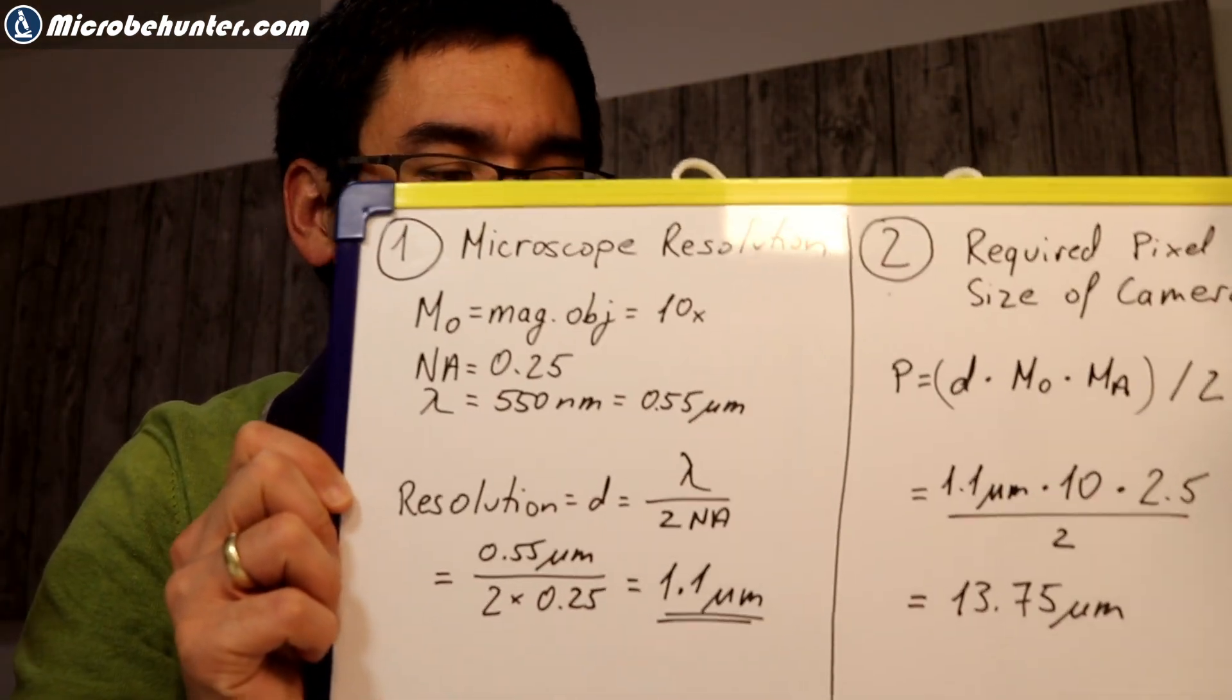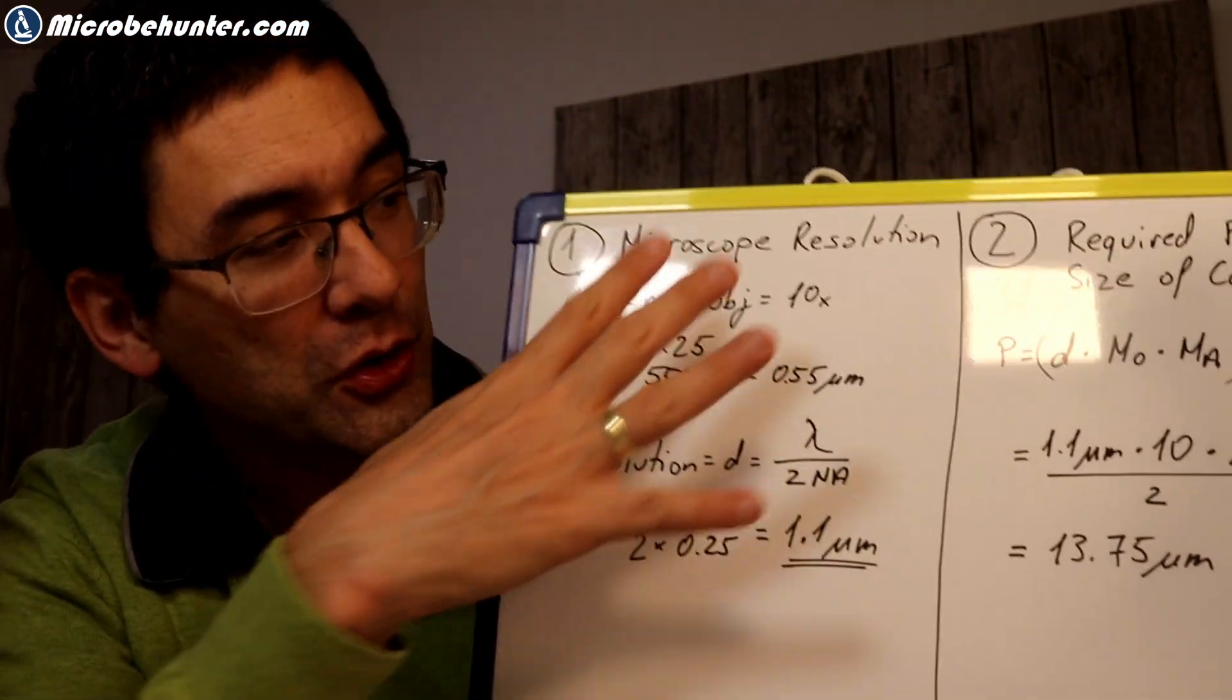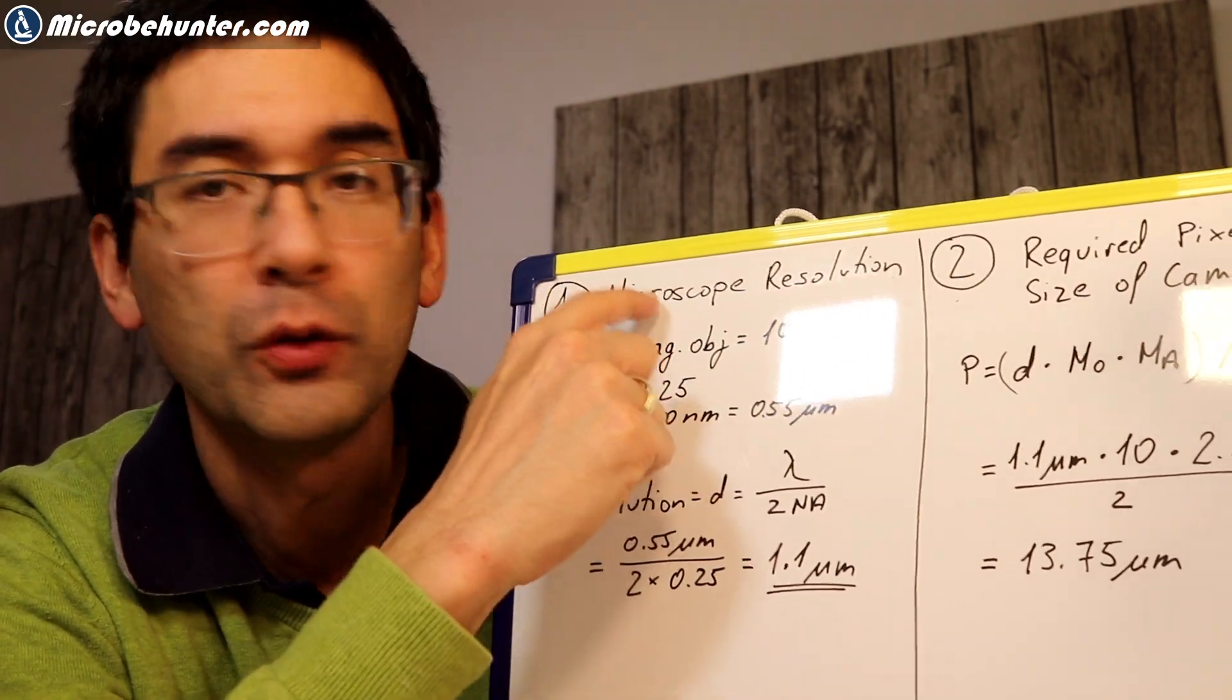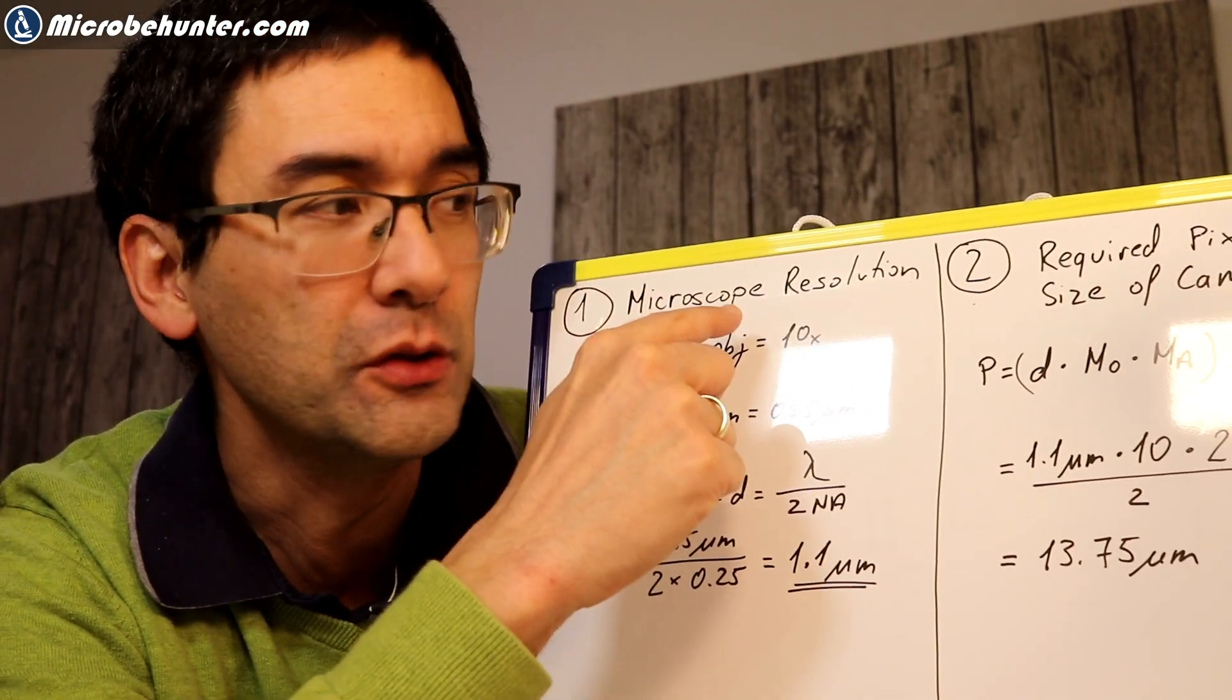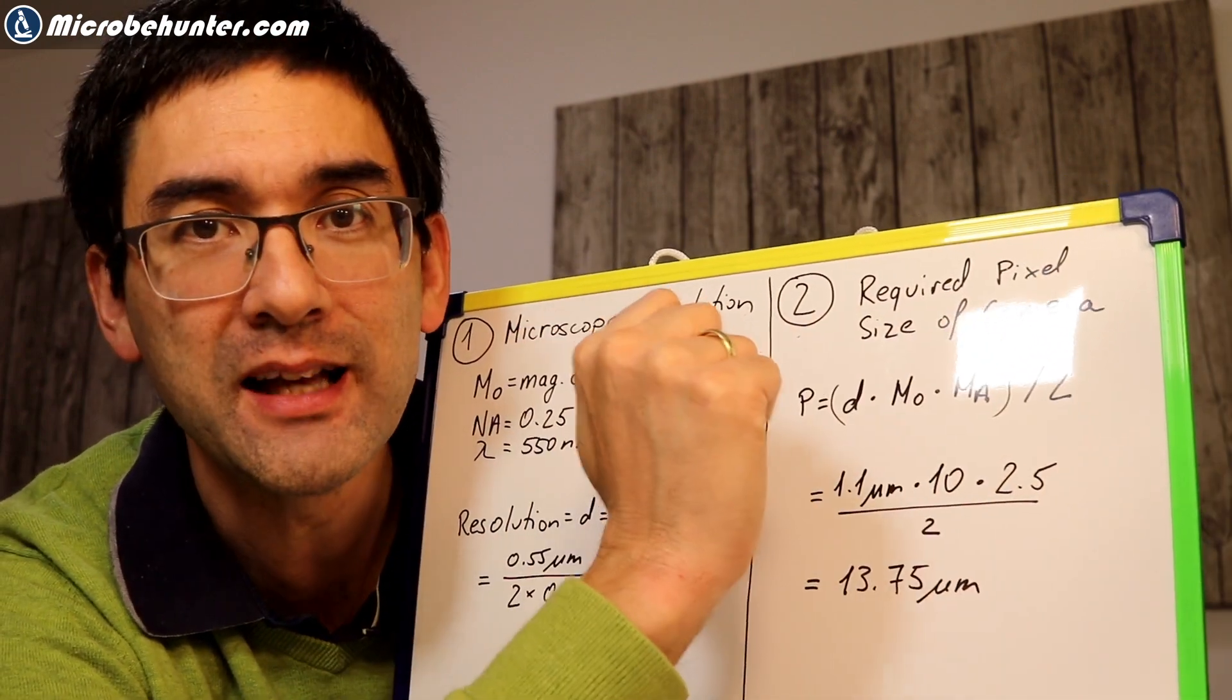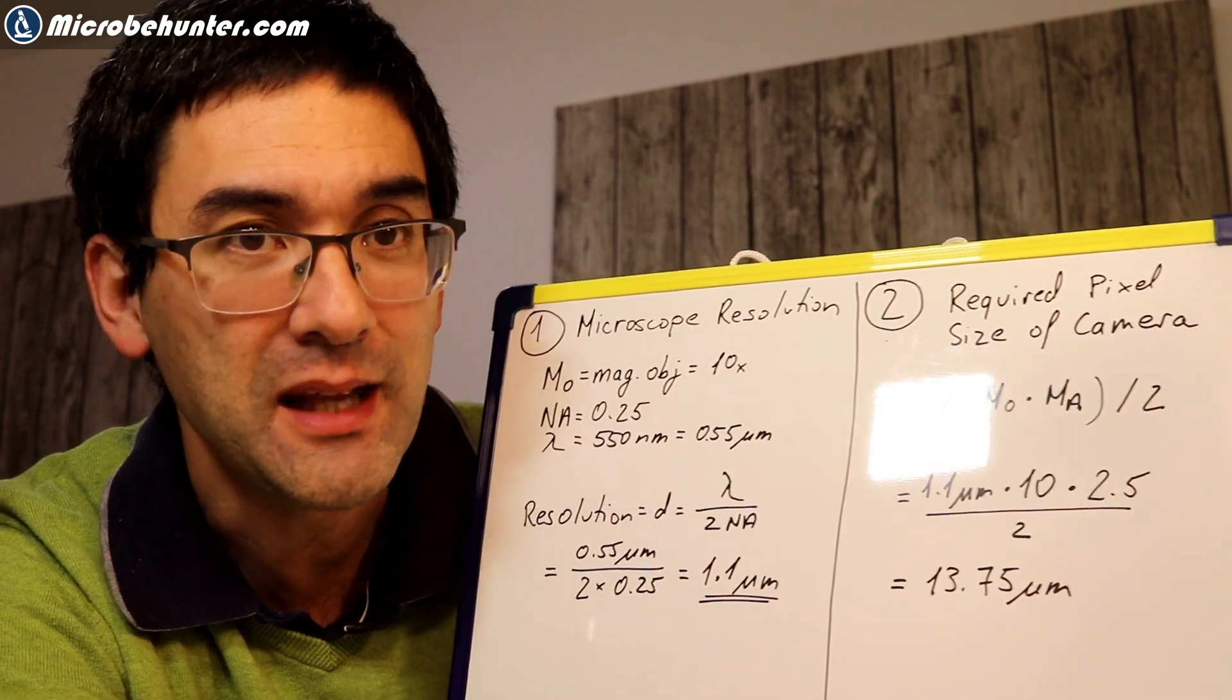So here it is. I have to hold this up a little bit here. We're going to start here on the on the left side. And here, first of all, we have to determine the microscope resolution. And then later on, we are going to determine the required pixel size of the camera. But we will take it step by step.